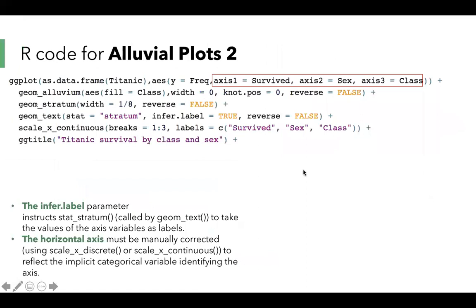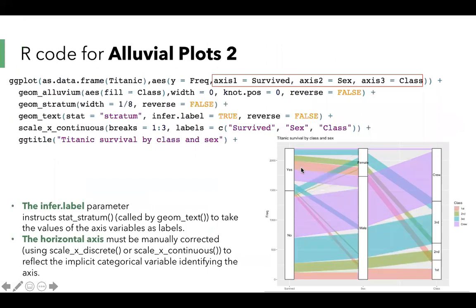Let's look at the second example using the data of Titanic. We set three axes and put layers one by one. We can get the plot like this.